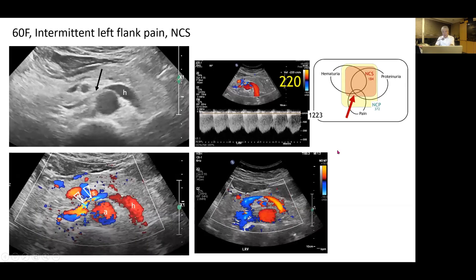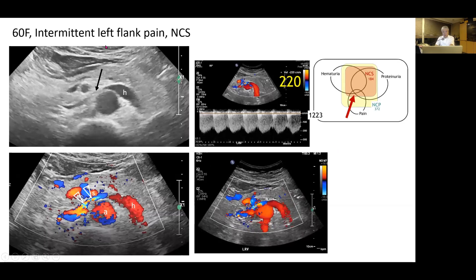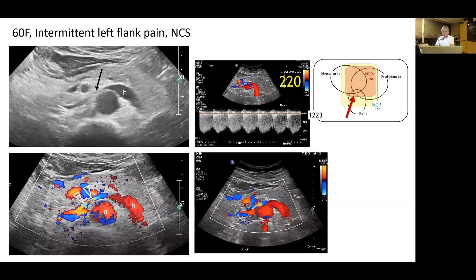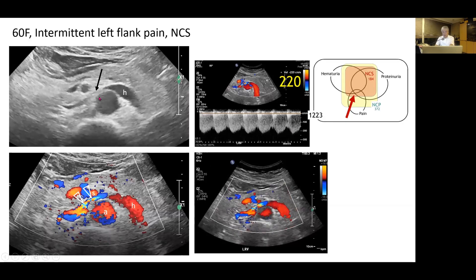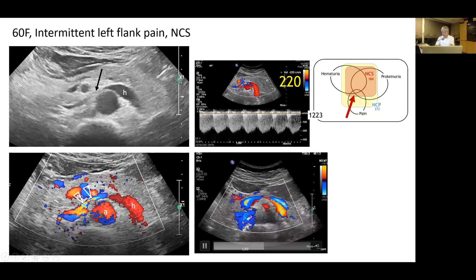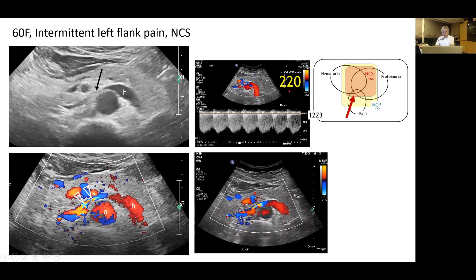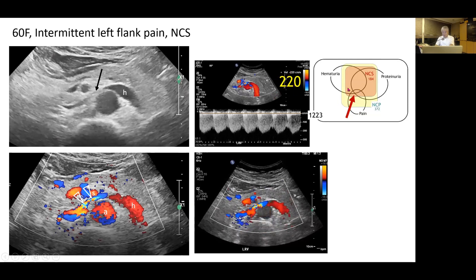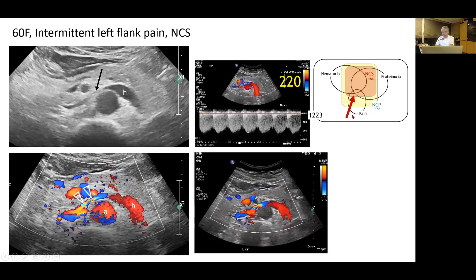Another Nutcracker syndrome patient with intermittent left flank pain: ultrasound shows narrowing of the aorto-mesenteric left renal vein and bright colored high-velocity flow with a peak flow velocity of 220 cm/s. She belongs to the Nutcracker syndrome with left flank pain category.